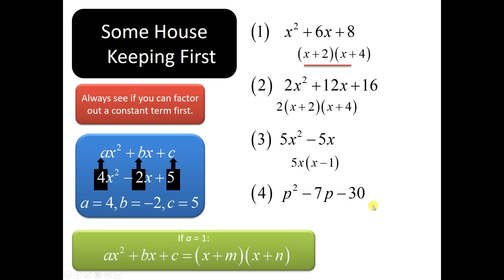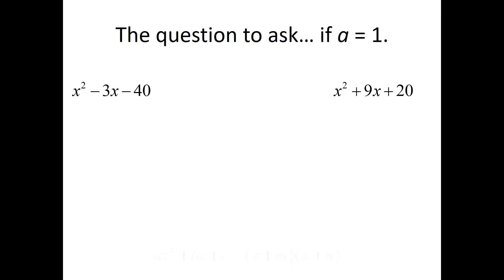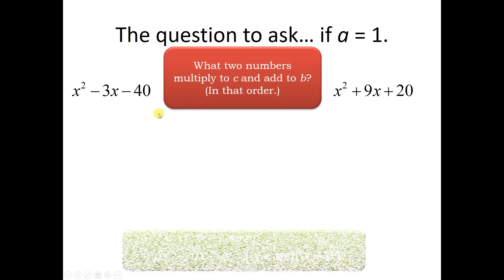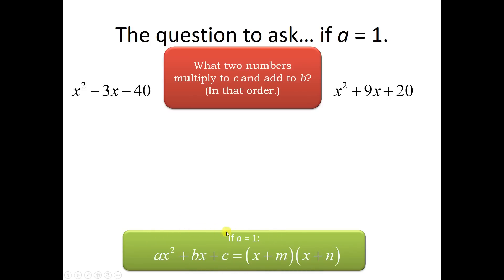The two numbers that multiply to negative 30 and add to negative 7 would be 3 and negative 10. You could write it as p minus 10 and p plus 3 — you can change the order of multiplication without changing its value. Whenever a equals 1, we have to ask ourselves: what two numbers multiply to make c, and the same two numbers add to make b? We do it in that order. There are far more things that add to make a negative 3 than there are that multiply to make a negative 40, so start with multiplication. m times n equals c, and when you distribute and combine like terms, m times x and n times x are like terms that combine to make b.